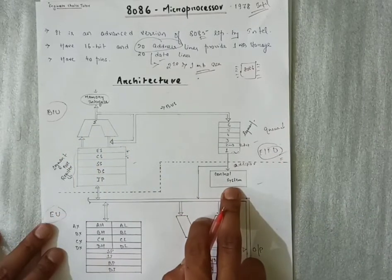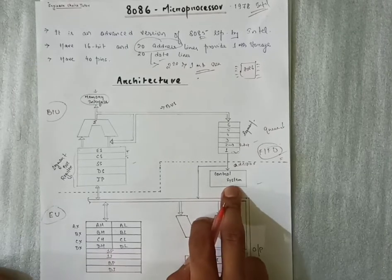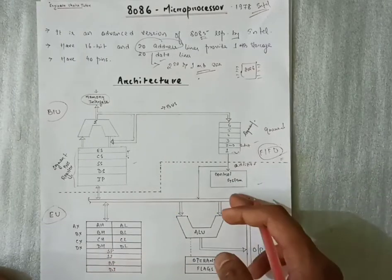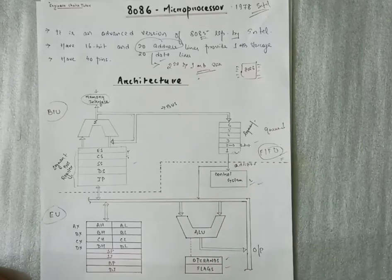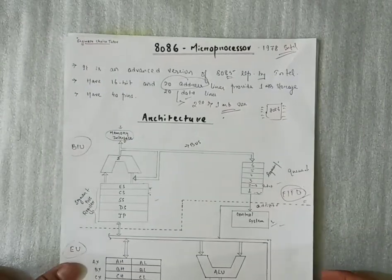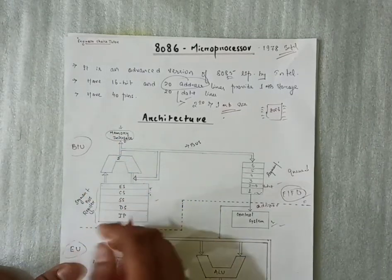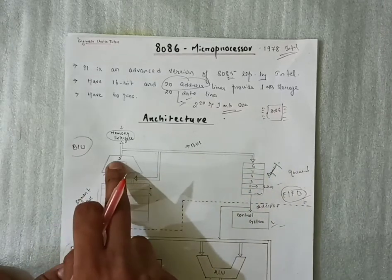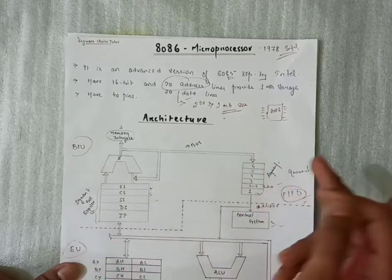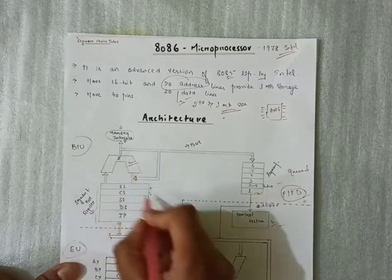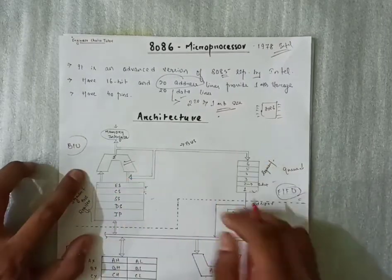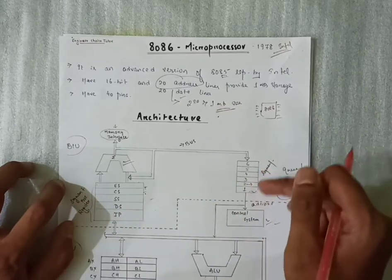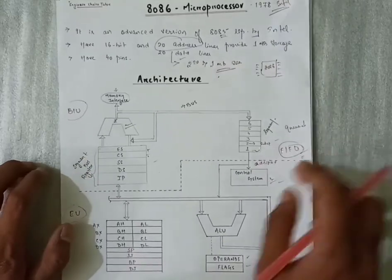The last part of BIU is the Control System. By the name it suggests, it controls the flow of data — where to go, what execution to perform, where to send the output, and from where to collect the input. This is all taken care of by the control system. To recap: from memory we get the instruction, the register segment stores the data, the adder collects the physical address, data comes through the bus into the queue segment one by one up to six slots, and after the control part, it moves to the Execution Unit.